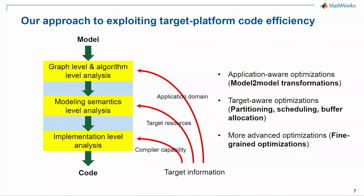We are achieving this by laying down a layered approach to solving these problems — in other words, solving the optimization problems at the level where it is suitable. We have three different levels: model-to-model transformation at the application level, Simulink semantics level, and the implementation level. At each of these levels, we can bring in target-specific information to further address the needs of a given platform. This is the approach we are going to take going forward to bring in the advantages of target-specific concurrences that are available.